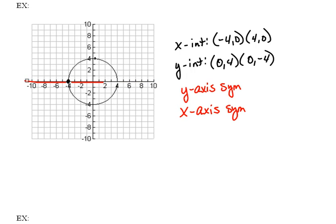Now circles are beautiful because not only do they have x-axis symmetry and y-axis symmetry, they also have origin symmetry. If I were to draw a diagonal line here basically through the origin, again we have perfect balance on either side.